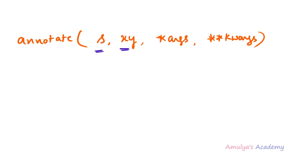xy is nothing but the coordinates — it takes float and float values. You mention the x coordinate and y coordinate, which is the point where you want to annotate. The keyword arguments help us change text properties like font, font style, font size, etc. Here s and xy are compulsory; the rest are optional.